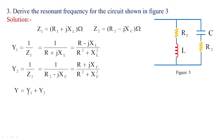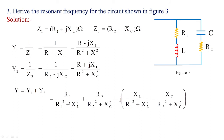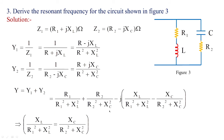The total admittance Y equals Y1 plus Y2. Separating the real and imaginary parts, we obtain the conductance value and the susceptance value. At resonance, we equate the susceptance value to zero. The impedance of the circuit will be completely resistive, so this imaginary part is set equal to zero under resonance.